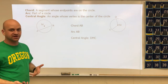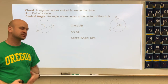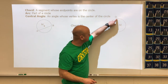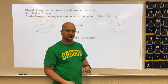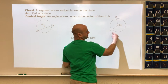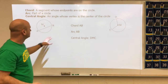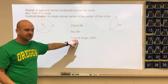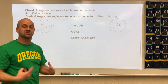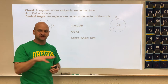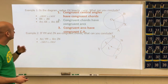We also talked about central angle — that's an angle whose vertex is the center of the circle. Here, angle CMD or DMC is the central angle. So from chord AB, arc AB, and central angle DMC, we're going to draw conclusions that allow us to solve problems using given information.